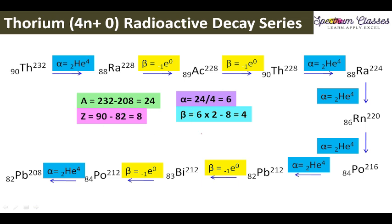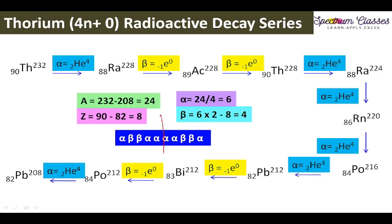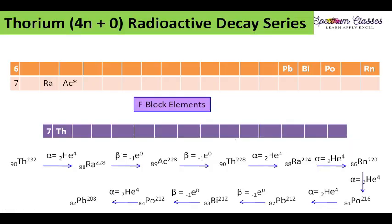It seems difficult to memorize this, so here is a trick. The sequence is: alpha, beta, beta, alpha, alpha, alpha, beta, beta, alpha. I just break it into two halves. Imagine this is a mirror: on one side you have alpha, beta, beta, alpha — and if you revert the order you get alpha, alpha, beta, beta — and then alpha. In my opinion, this is the easiest way to memorize it.